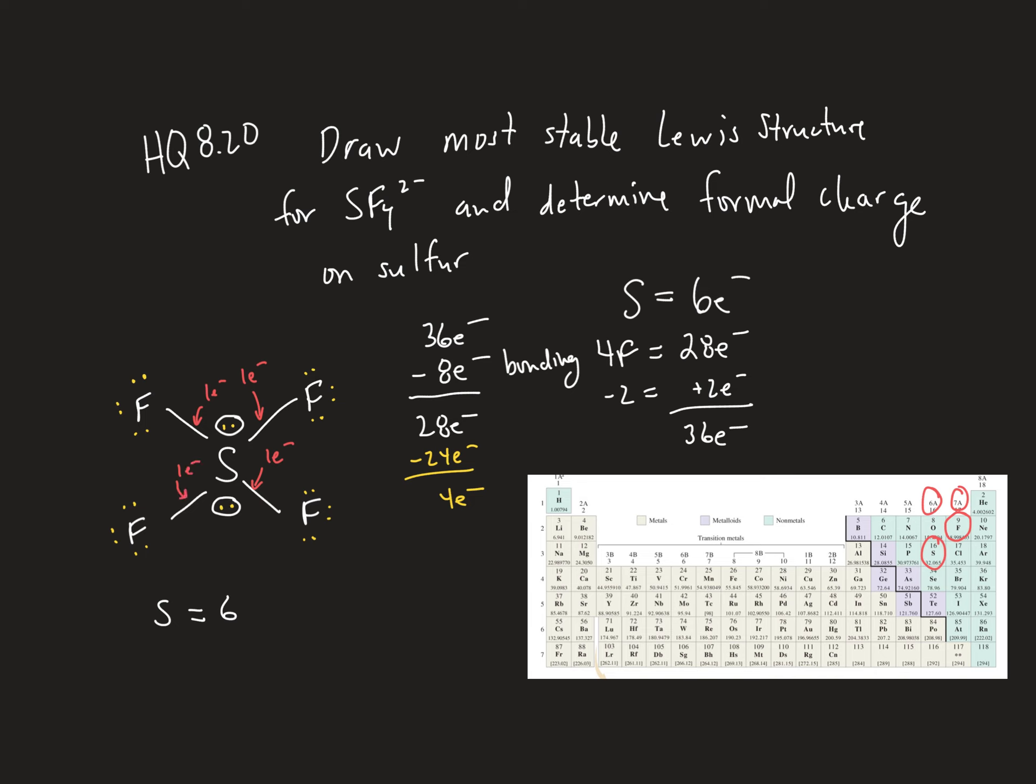So I've got 4 electrons that are bonding that are assigned to sulfur. 1, 2, 3, 4. And then I've got 1, 2, 3, 4 that are non-bonding for a total of 8 electrons that are assigned to sulfur. So 6 minus 8, the charge on sulfur ends up being minus 2.